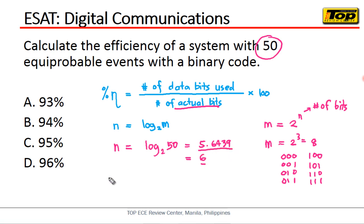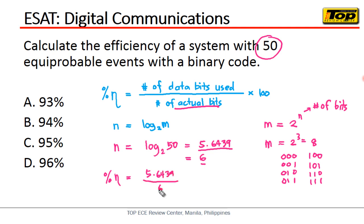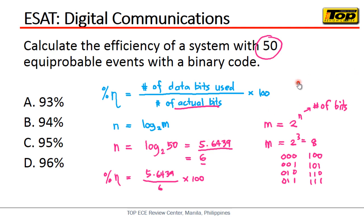Now we can get the efficiency. Efficiency is equal to 5.6439 divided by 6, multiplied by 100. The efficiency will be equal to 94%, which is letter B. That is the answer for this digital communications problem.